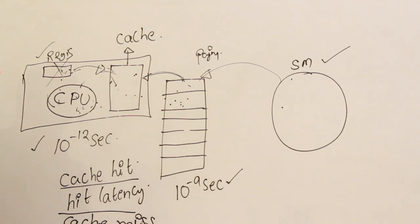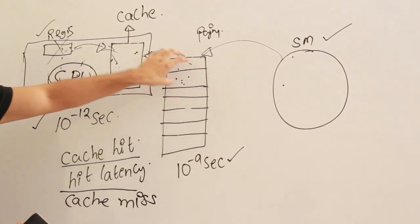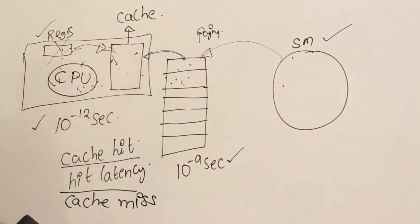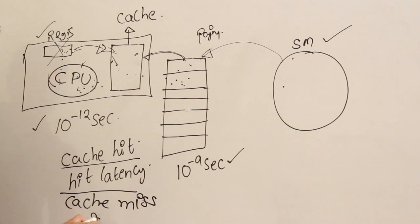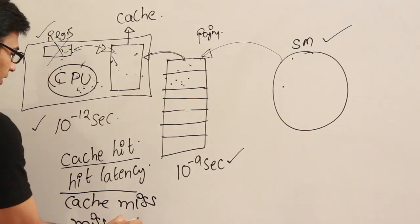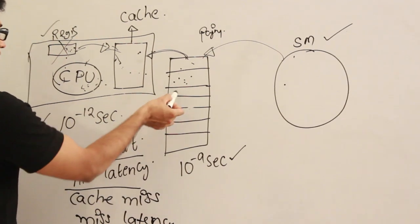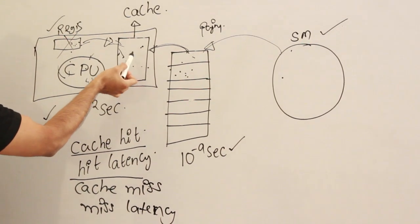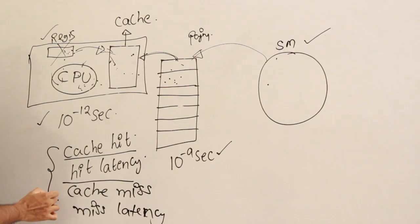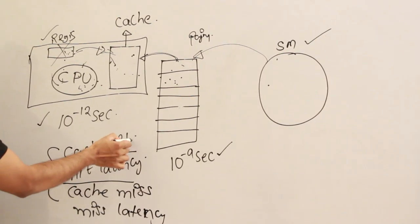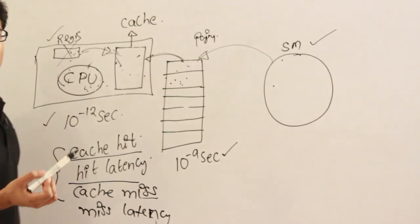In case of a cache miss, in order to get the required element we have to go to the main memory, fetch it, and read it. That is called miss latency — the time taken to get something from the main memory, place it into the cache, and then get it. Hit latency and cache miss latency both depend on various factors.